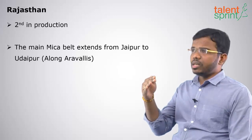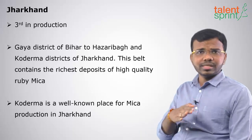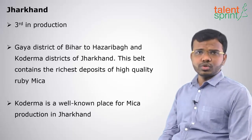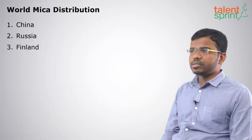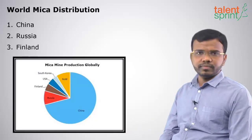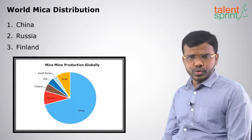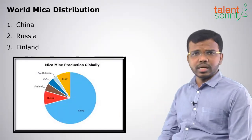To summarize: first is Andhra Pradesh, next is Rajasthan, and third is Jharkhand. Andhra Pradesh leads in both deposits and production of mica. Remember, mica is a very good insulator. In terms of world distribution and production, the highest is China, next is Russia, and then Finland.